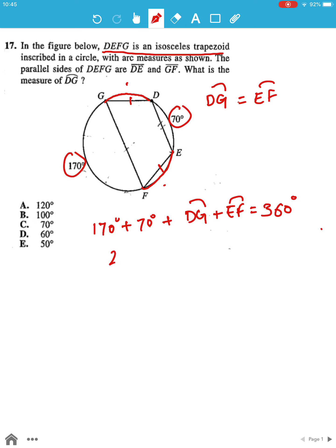Now 170 plus 70 gives us 240 plus DG is equal to EF. So 2 times DG is equal to 360. 2DG is equal to 360 minus 240, which is 120.